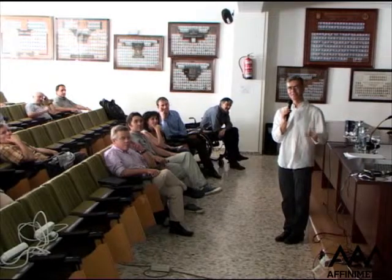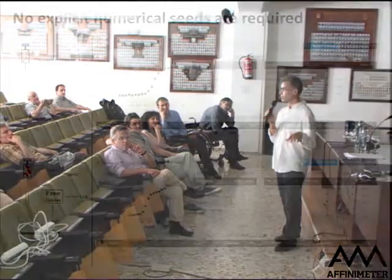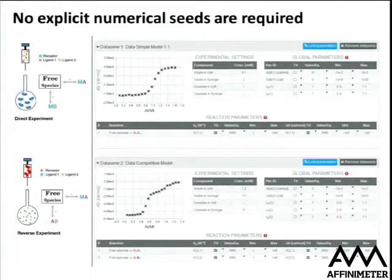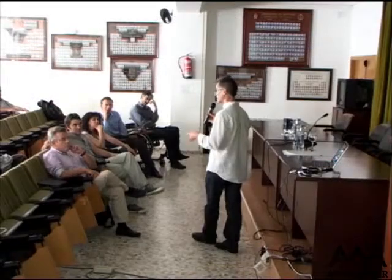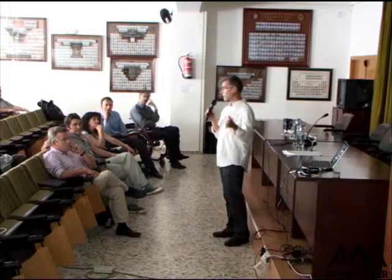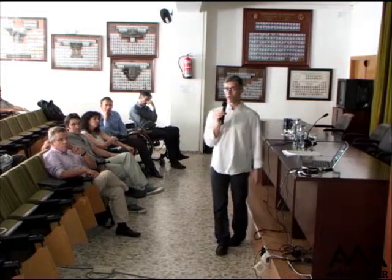Another implemented functionality: normally when using a numerical algorithm you need to provide a seed close to the final result to start the iterative process. In Affinimiter you don't need to provide a seed — you can just type RND, meaning random number, and the software will automatically generate a random number between the specified lower and upper limits for that parameter.